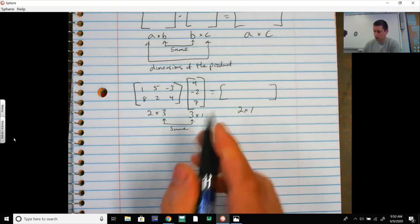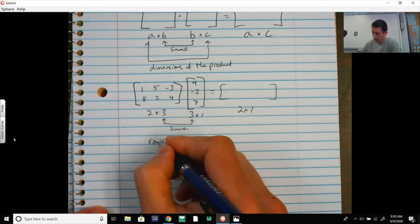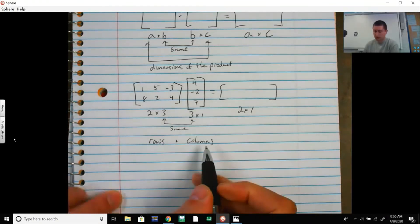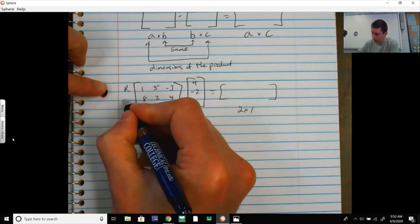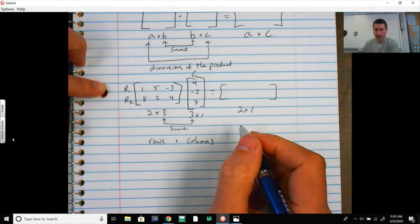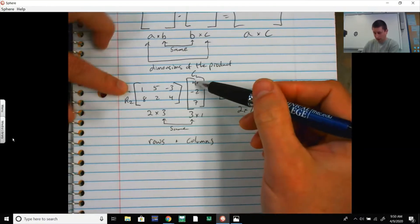What you do is you take your rows from this matrix times the columns of this matrix. I'm going to take a row—this is row 1 and this is row 2—and here I just have one column, column 1. I have to take each row times each column.